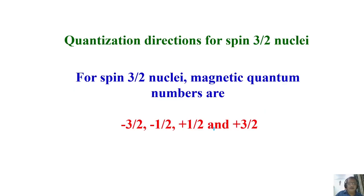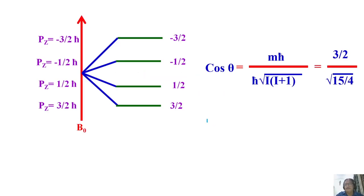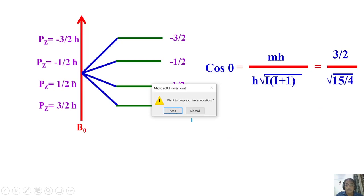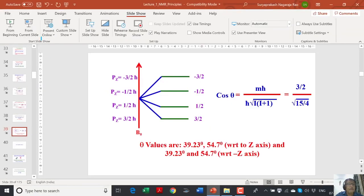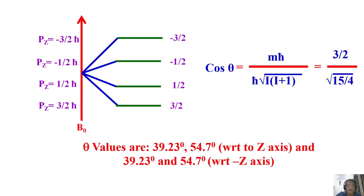For spin-3/2 nuclei, there are four possible quantization directions for m = −3/2, −½, +½, and +3/2. Using cos θ = m / √(I(I+1)) with I = 3/2: for m = ±3/2, θ = 39.23°; and for m = ±½, θ = 54.7° — the same as for spin-½ nuclei — in the direction of the field and opposite respectively.